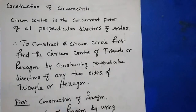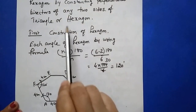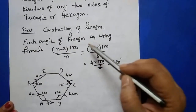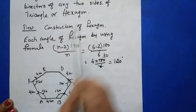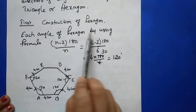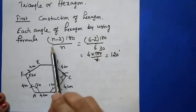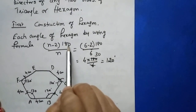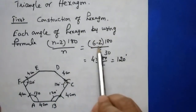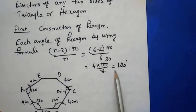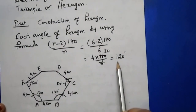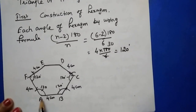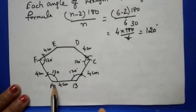Before constructing the circumcircle, you need to know how to construct a hexagon. To construct a hexagon, in the ninth standard you learned in the polygon chapter that each angle of a hexagon is found using the formula: (n − 2) × 180 / n. For n = 6: (6 − 2) × 180 / 6 = 120 degrees. Each angle of a hexagon is 120 degrees.